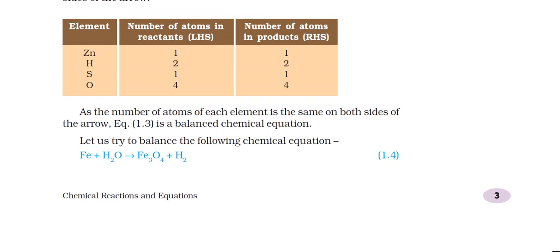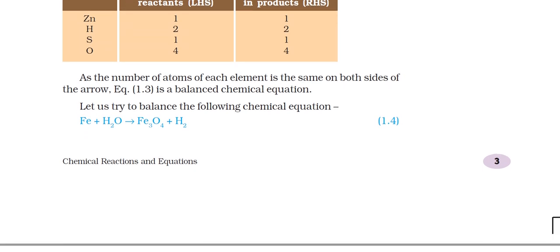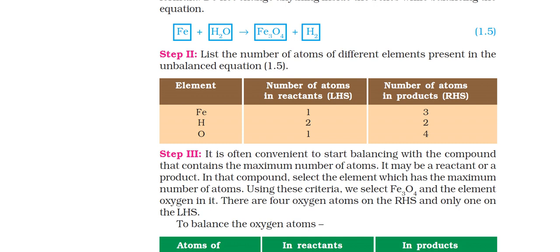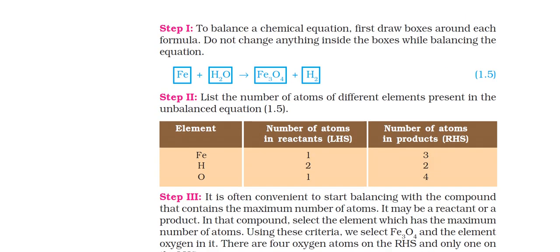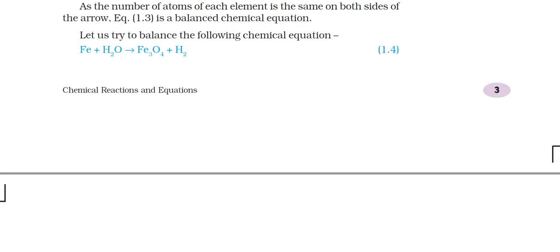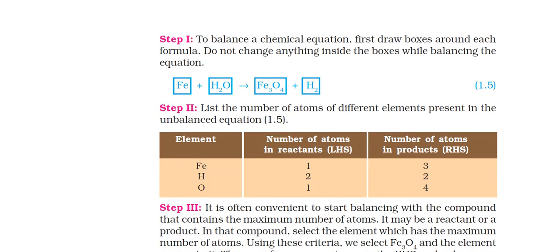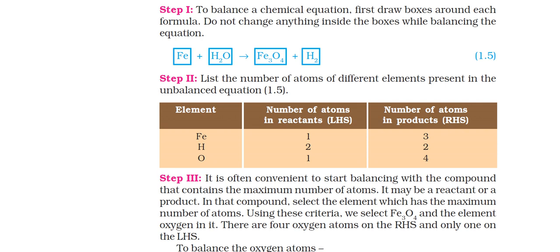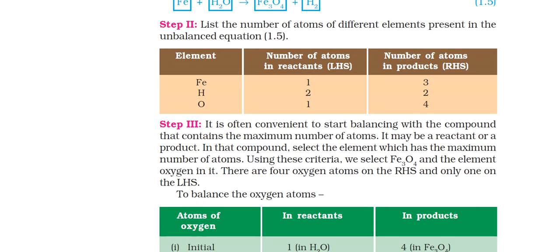Now we will try to balance this equation: Fe plus H₂O gives Fe₃O₄ plus H₂. We need to check if it is balanced. On the reactant side there is 1 Fe atom, but on the product side there are 3 — so it is not balanced. List the number of atoms present in the unbalanced equation: Fe has 1 on LHS and 3 on RHS; H has 2 on each side; O has 1 on LHS and 4 on RHS. We should start with the compound with the maximum number of atoms.